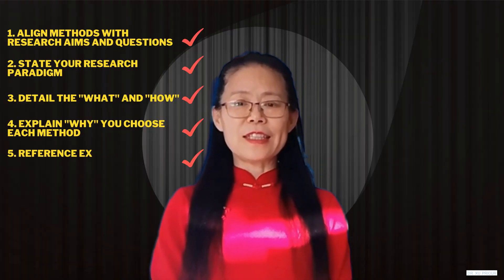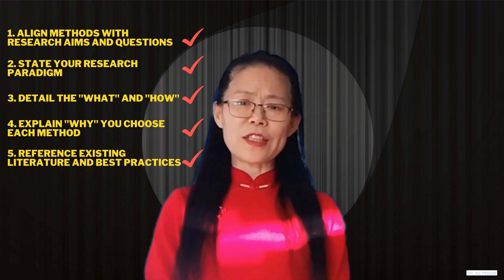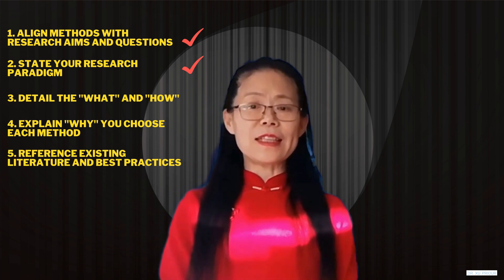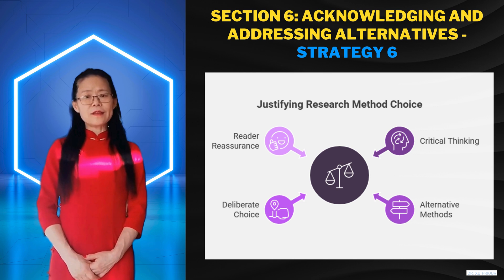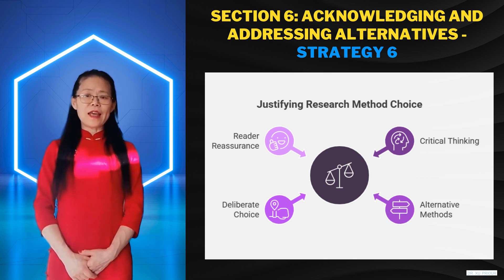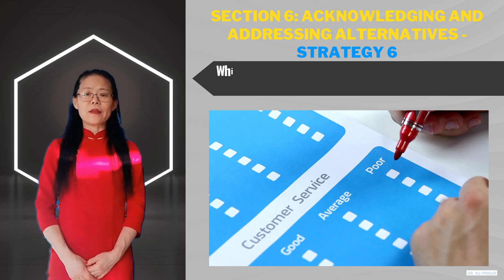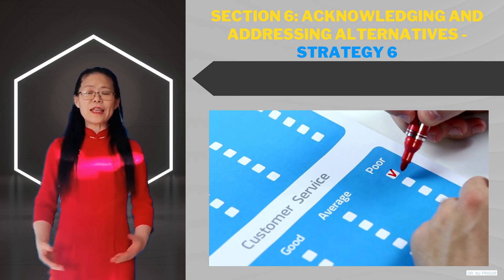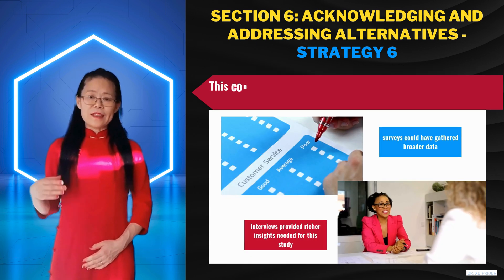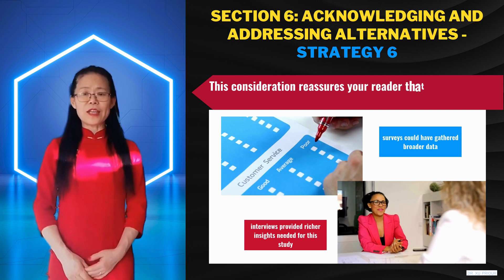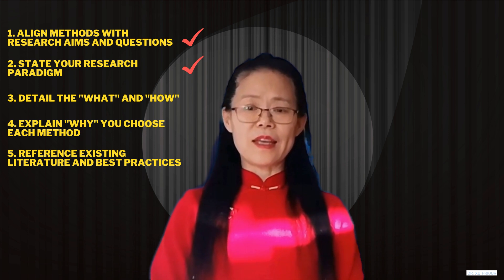Showing you know the field is excellent, but examiners also want to see that you've weighed your options. This leads to the sixth strategy: address alternatives. Show critical thinking by briefly mentioning other methods you considered and why you didn't choose them. For example, while surveys could have gathered broader data, interviews provided the rich insights needed for this study. This reassures your reader that your choice was deliberate and well thought out.